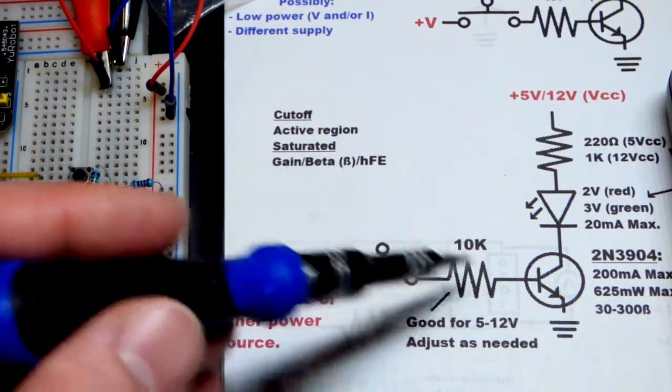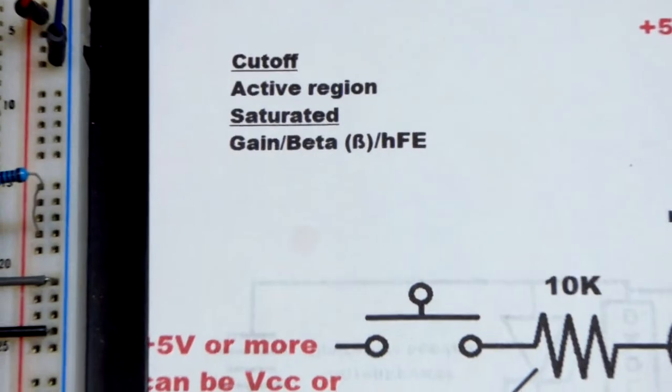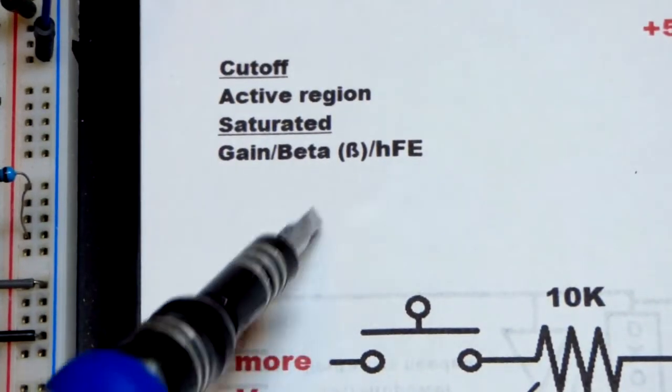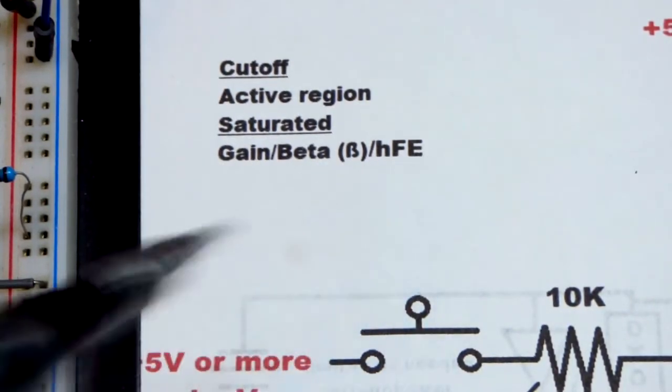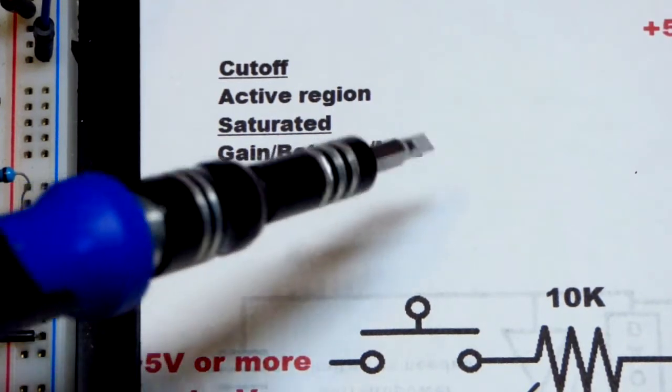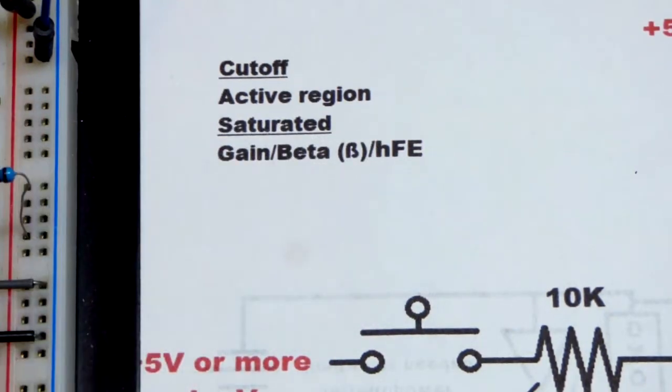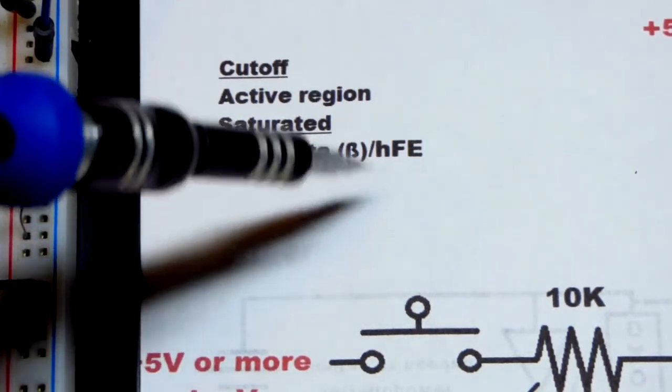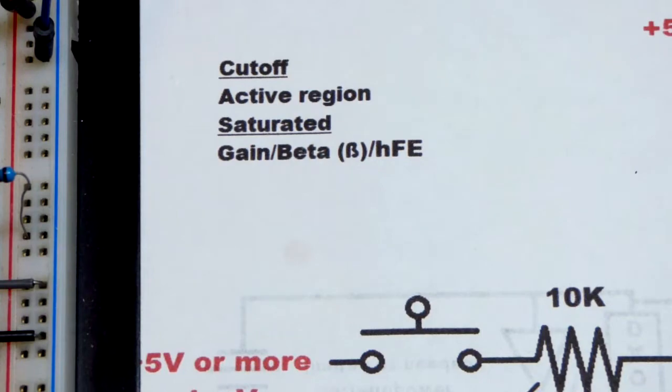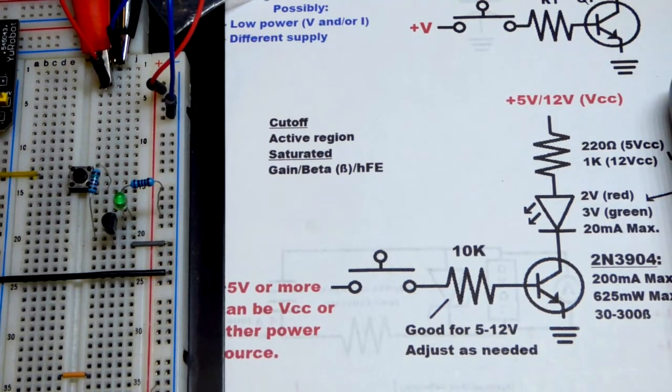That's the symbol for beta, the Greek letter beta. You could also call it HFE. I don't think anybody does that anymore, but there are texts out there that will say HFE. It means the same thing as gain or beta. These three different terms and the symbol are all used to mean exactly the same thing when it comes to transistors and their gain.